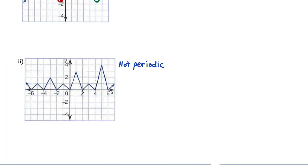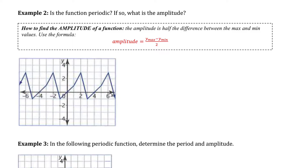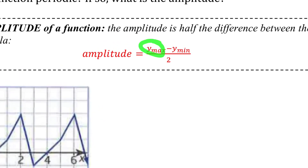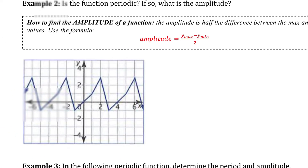So for that reason, all we have to say for this function is that it's not periodic. Now let's move on to Example 2, which says: is the function periodic? If so, what is the amplitude? Remember, amplitude is half the distance between the max and min values. To find it, use the formula: (y-coordinate of max − y-coordinate of min) ÷ 2.